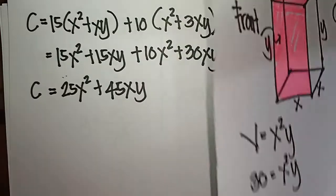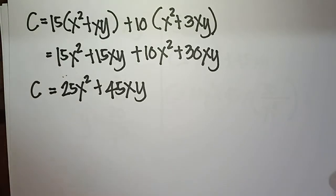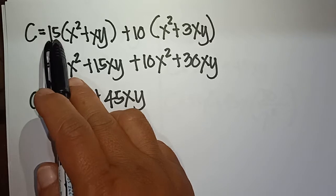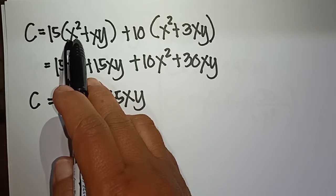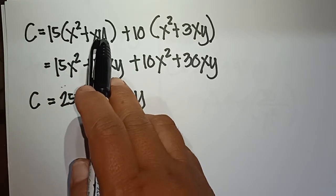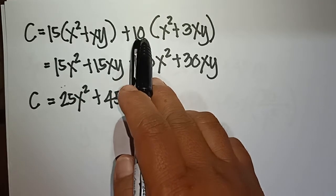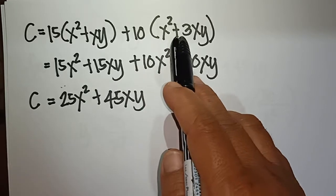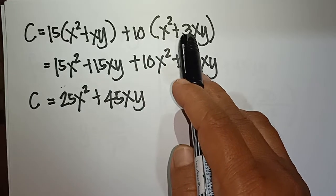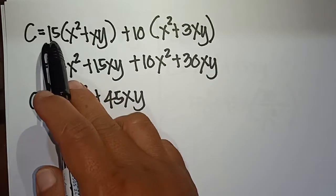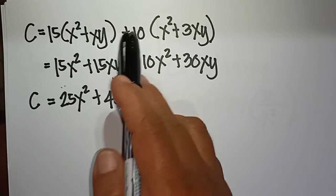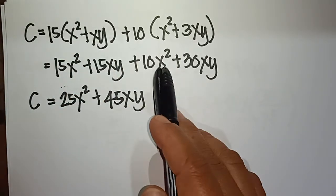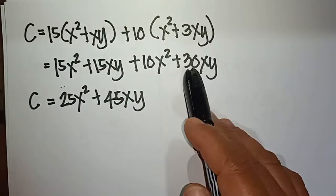The cost formula equals 15 times (area of the top plus area of the front) plus 10 times (area of the base plus area of the three sides). Distributing: 15x squared plus 15xy plus 10x squared plus 30xy.